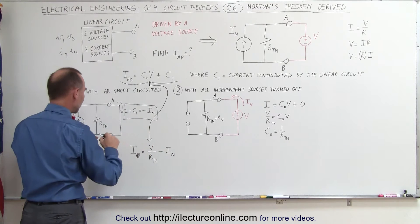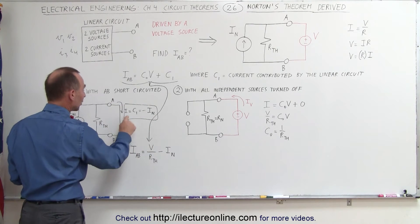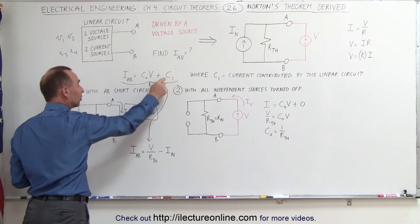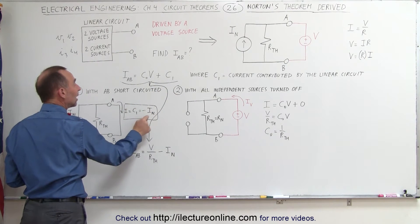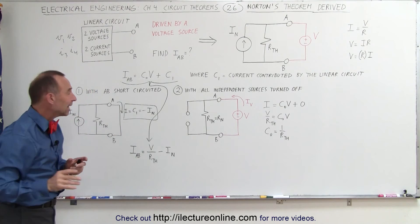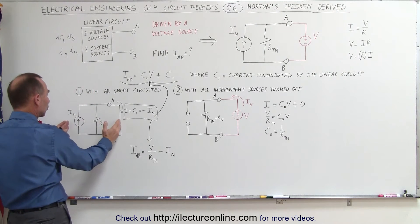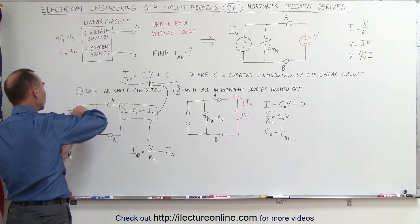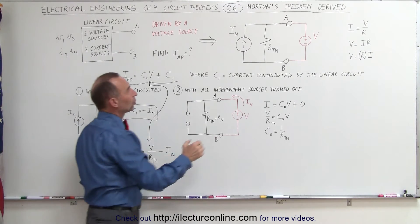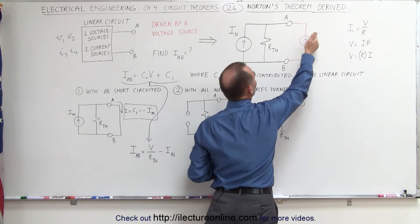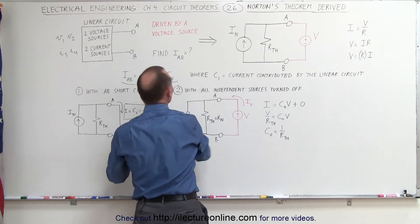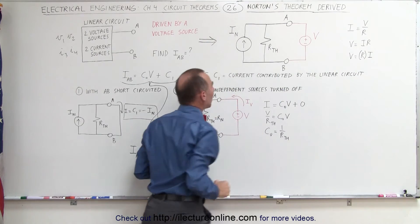Looking at the final equation, we can say that the current is simply going to be equal to the contribution of the Norton's theorem circuit, which is going to be equal to I Norton. We write negative I Norton because the current from the Norton equivalent source is going to be clockwise, and the current driven by the voltage source is going to be counterclockwise, so we plug in a negative sign to indicate that this will be in the opposite direction.